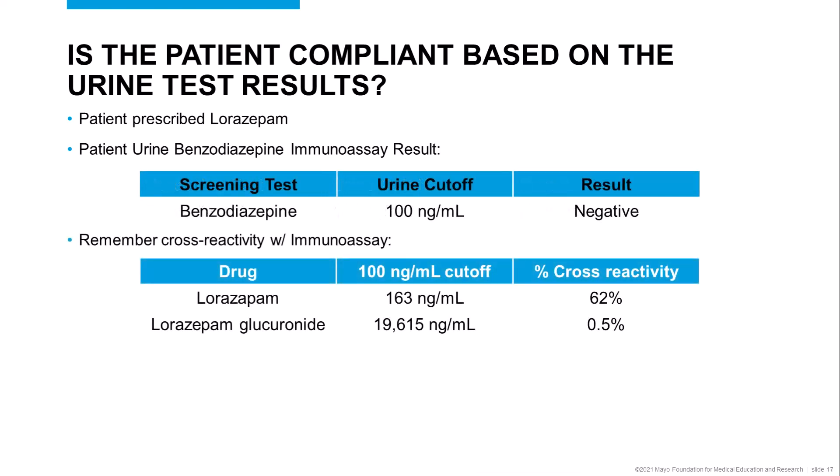The physician must remember and understand the limitations of the immunoassay, and should contact the lab to determine the cross-reactivity of the immunoassay used with the prescribed benzodiazepine. The clinician must also remember that most benzodiazepines appear in the urine as the glucuronidated form, and this assay has very poor cross-reactivity to lorazepam-glucuronide. Therefore, this result could be a false negative, since the concentration of lorazepam-glucuronide would have to be greater than 19,615 ng/mL to give a positive result.